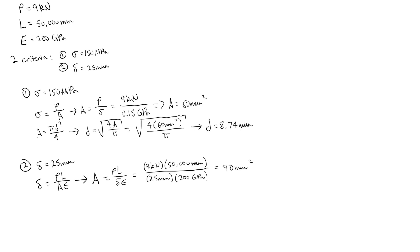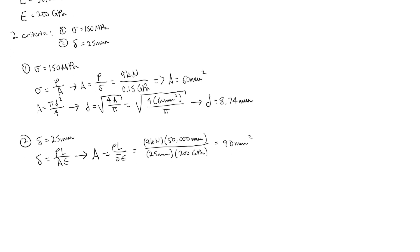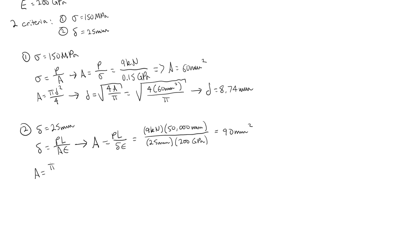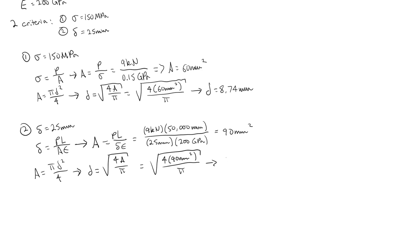Using the same formula A = πd²/4, solving for the diameter gives d = √(4A/π). Plugging in the area of 90 mm², we get that the diameter in this case is equal to 10.70 millimeters.